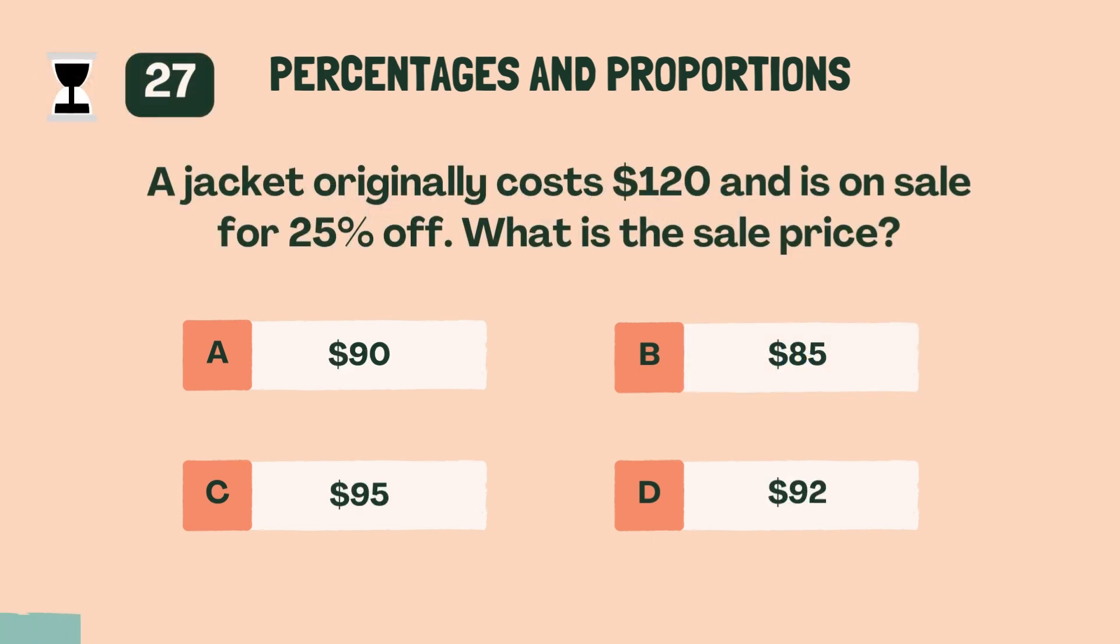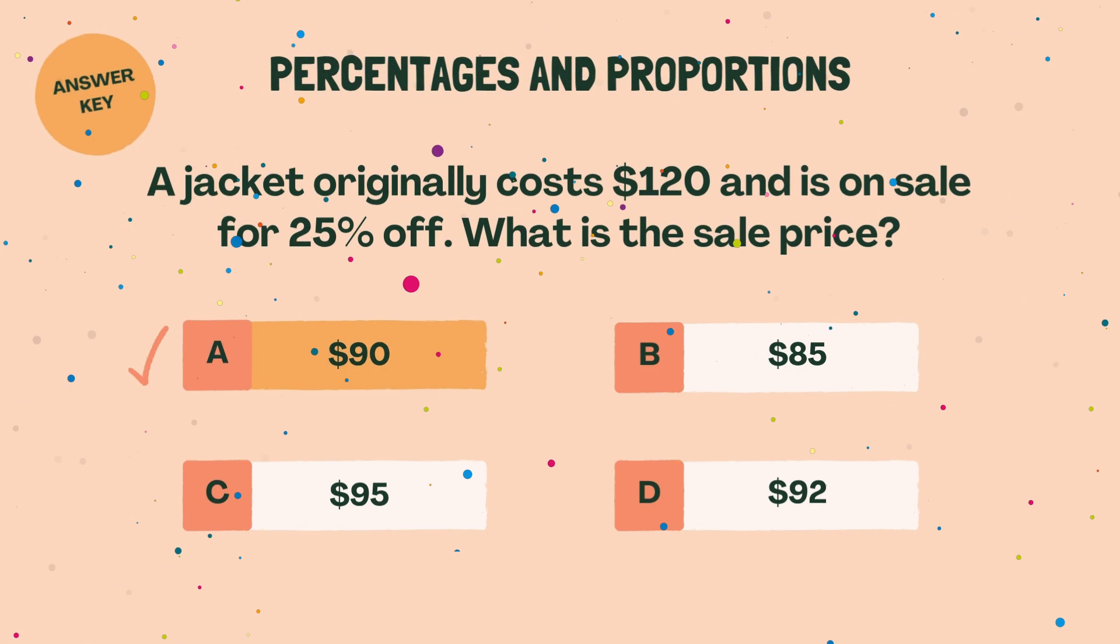A jacket originally costs $120 and is on sale for 25% off. What is the sale price? A, $90.